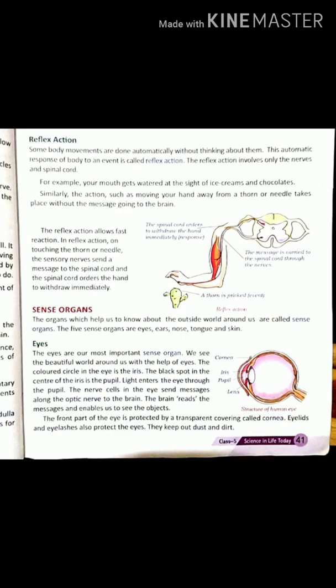For example, your mouth gets watered at the sight of ice cream and chocolate. When you see chocolate or ice cream, your mouth gets watered. Similarly, moving your hand away from a thorn or needle takes place without a message going to the brain. When your hand touches a thorn, the spinal cord orders the hand to withdraw immediately.